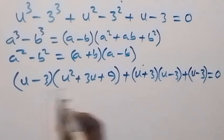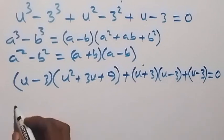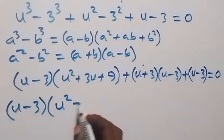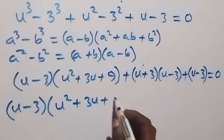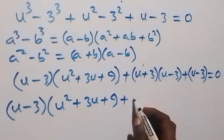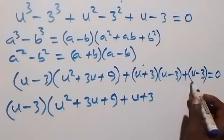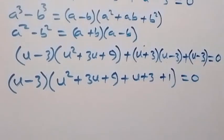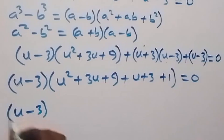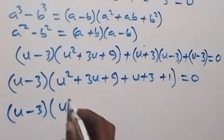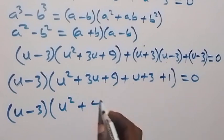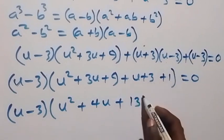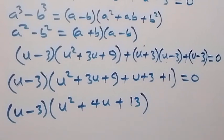Applying this, we get (u minus 3)(u squared plus 3u + 9) plus (u plus 3)(u minus 3) plus (u minus 3) equals zero. We can see (u minus 3) is a common factor, so factoring it out we have (u minus 3) into bracket [u squared plus 3u plus 9 plus u plus 3 plus 1] equals zero.